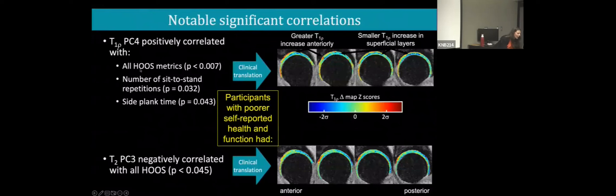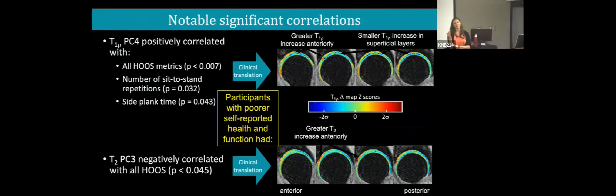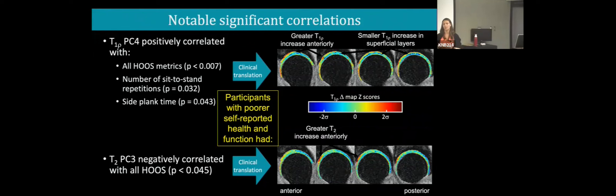T1-Rho PC four was correlated with HOOS sit-to-stand and side plank, meaning that with more advanced OA, subjects didn't hold the side plank as long and didn't perform as many sit-to-stand repetitions — as you would expect. We also had associations with walk test and HOOS metrics. People who had more degeneration or patterns of more degeneration tended to not perform as well or report as favorably on the HOOS metrics. Interestingly, some participants would ask if they beat their side plank time from last year — they were training for it.